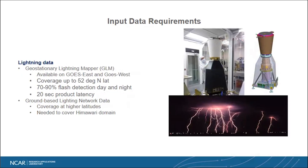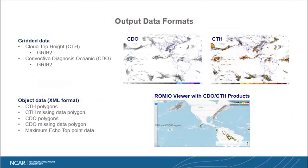For the lightning data, we have the Geostationary Lightning Mappers off the two GOES systems, which covers up to 52 degrees north with about 70 to 90 percent flash detection efficiency and a 20-second product latency. We also have ground-based lightning data as another source, which covers higher latitudes and is needed since Himawari doesn't have a GLM, so it's required if you want to cover the Himawari domain.